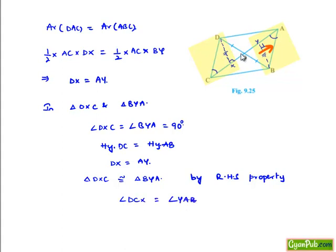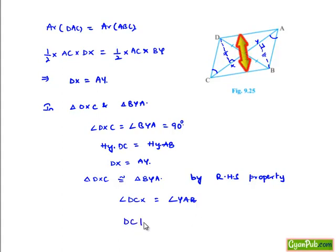These angles become alternate interior angles for lines AB and CD with AC as the transversal. Since the alternate interior angles are equal, we can say that DC is parallel to AB. And initially it is given that DC is equal to AB.